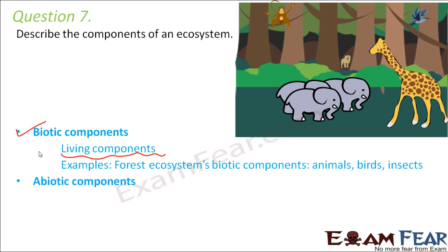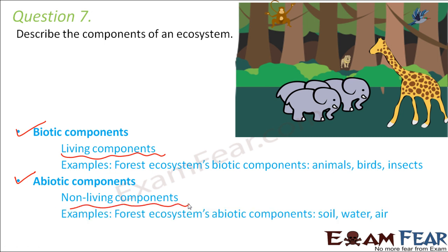Abiotic components are the non-living components. In the same forest ecosystem, you also have non-living components like soil, water, and air. So these are the two components of any ecosystem.